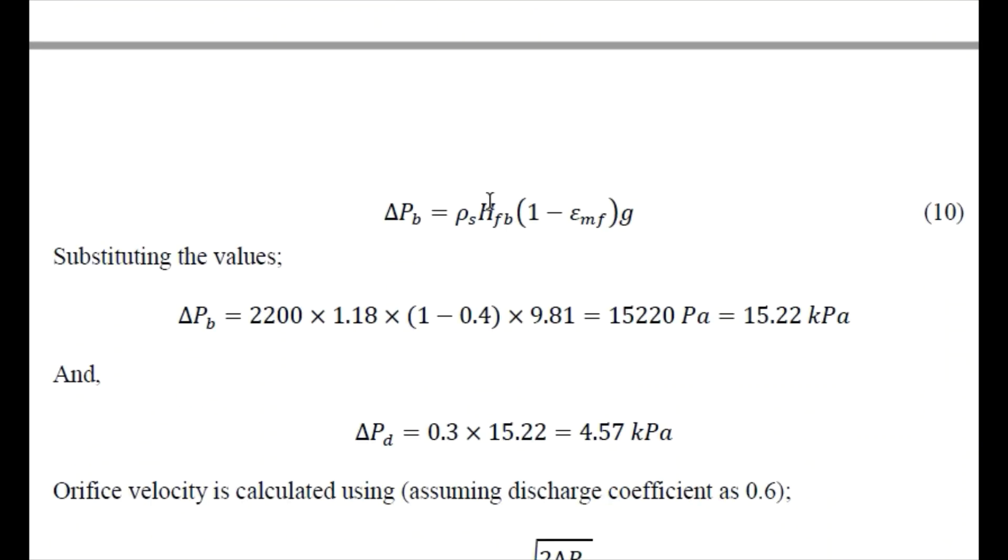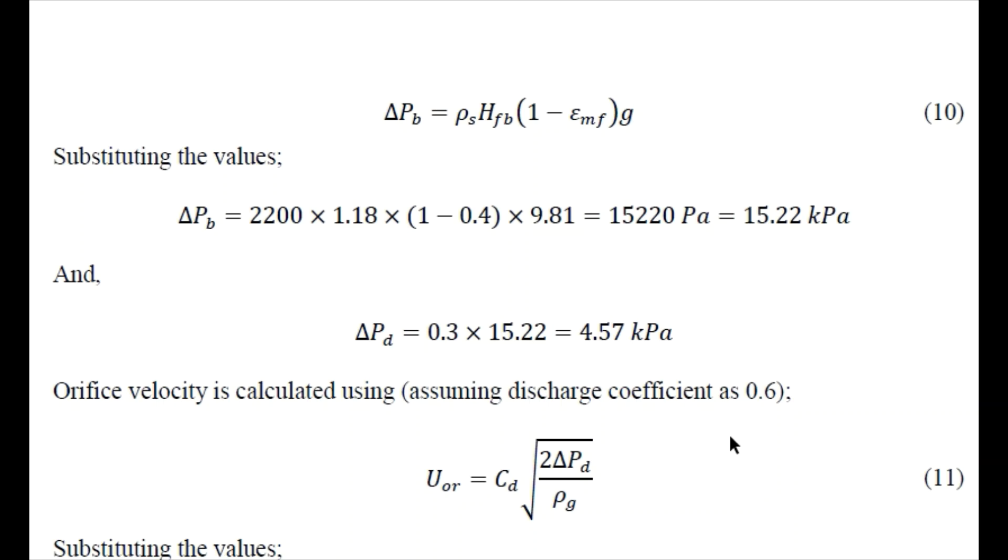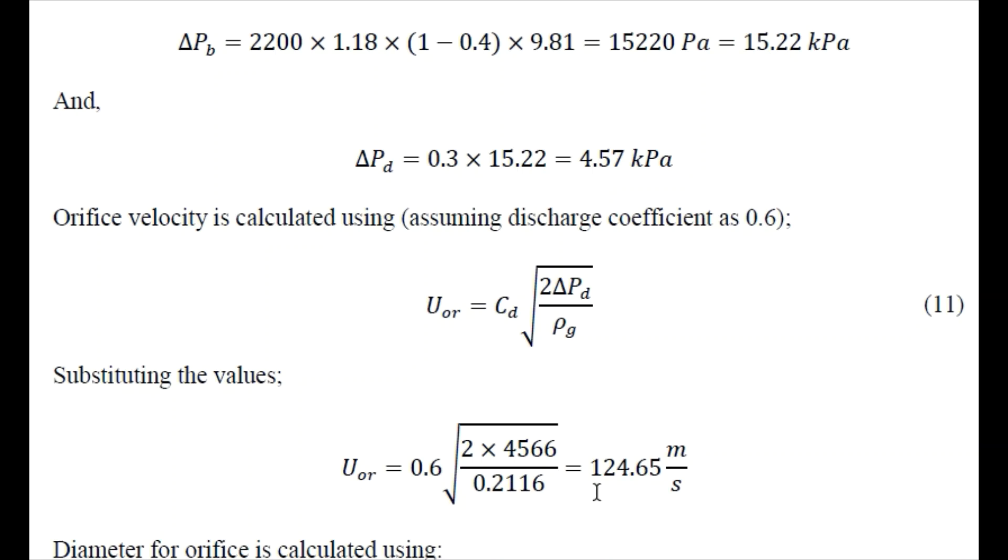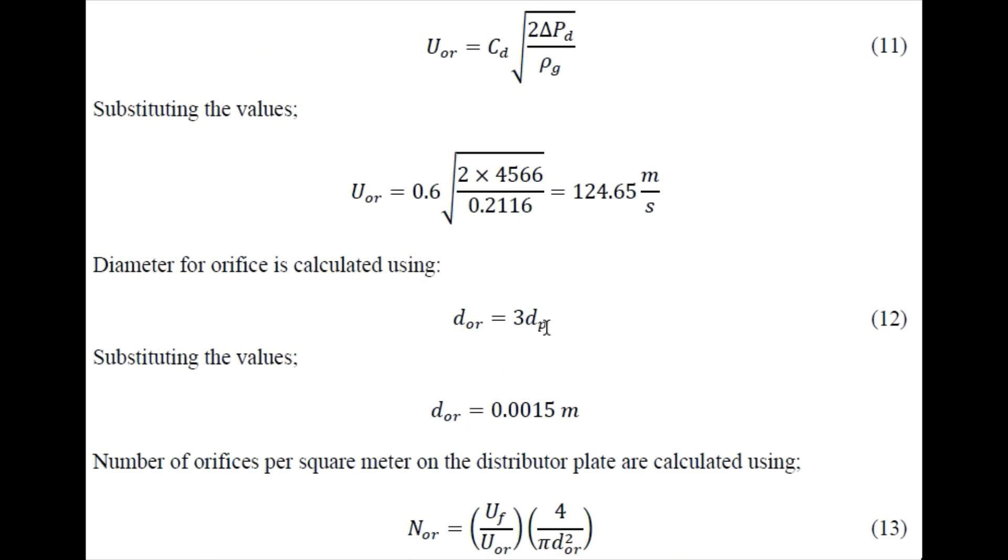Now we can find the orifice velocity. The distribution plate has different orifices, a number of holes in it. How much is the velocity through the orifice? We can use the discharge coefficient of the orifice, we know that it is around about 0.59 to 0.61, so we can take it as 0.6. Just substituting these values we obtain the orifice velocity as 124.65 meter per second. Orifice diameter is taken as three times the particle diameter, so we know that particle diameter is 0.5 mm, so we can determine the diameter of the orifice.